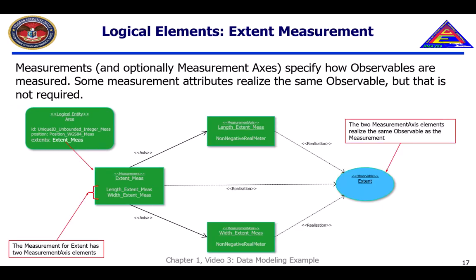The logical extent measurement has two axes: length and width. In this case, the measurement and its axes all realize the extent observable, but the measurement axis and the detail of the measurement is in meters, represented as non-negative real numbers.